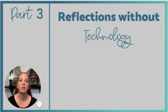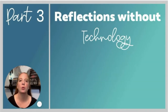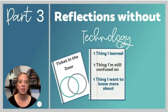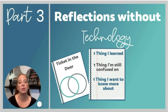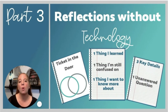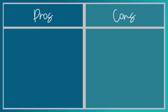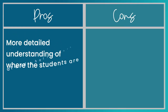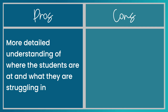Part three: Reflections without technology. Reflections that don't use technology could include things like a ticket in the door — perhaps asking them one thing they learned, one thing that they're still confused on, and one thing they want to know more about. Or asking them for three key details and one unanswered question. The pros of not using technology is that it can give you a more detailed understanding of where the students are at and what they are struggling on.